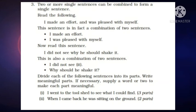Number three: Two or more single sentences can be combined to form a single sentence. For example, 'I made an effort and was pleased with myself' is a combination of two sentences: 'I made an effort' and 'I was pleased with myself.' Divide each of the following sentences into its parts. Write meaningful parts; if necessary supply a word or two to make each part meaningful. First one: 'I went to the tool shed to see what I could find' — three parts: I went to the tool shed / I went there to see / what I could find. Find out the rest of the answers yourself.